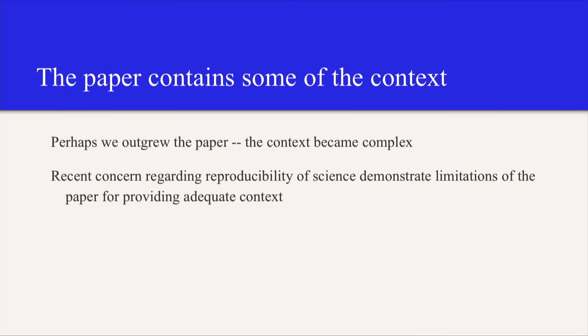So what is this context of the data that they're talking about? And it is true that the paper can name some of the context. But as we heard in the case of the software, it's very minimal. There's a whole iceberg of information going on about what that scientific investigation is like. And you're getting 8,000 words or whatever you're getting. And people understand. Perhaps we outgrew the paper. The context became complex.